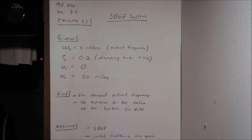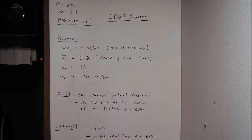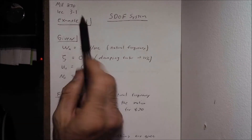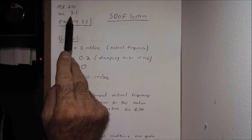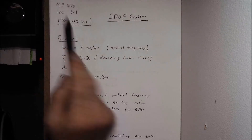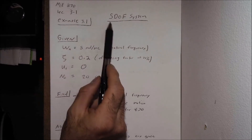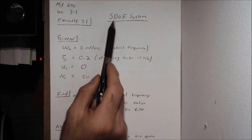Now that we've had a chance to read through the problem statement and understand what they've given us and what they're asking us to solve for, the next part is to create our setup page. I have up top lecture 3.1 from ME 270, example problem 3.1, a single degree of freedom system.